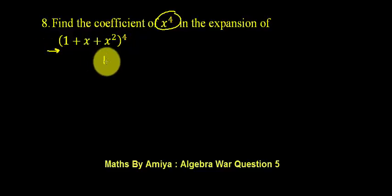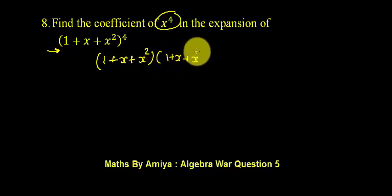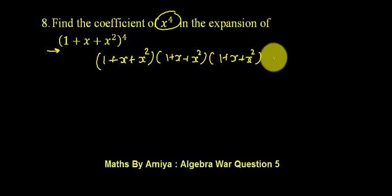So we can say it is nothing but (1 + x + x²) single time, (1 + x + x²) again, (1 + x + x²) again, (1 + x + x²) again. We have power 4, so we have 4 brackets and we want x^4.